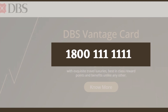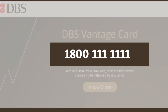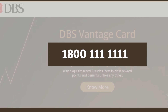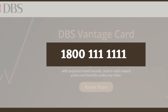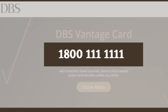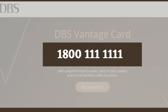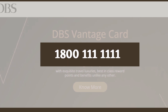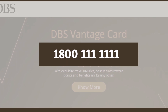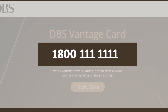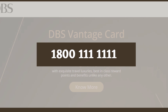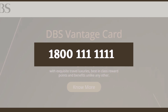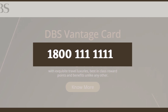Method 1: Cancel UOB credit card over the phone. For this, you will need to dial the number 1800-222121 (Singapore) or +65-6222121 (overseas), which are the UOB credit card cancellation hotline numbers.